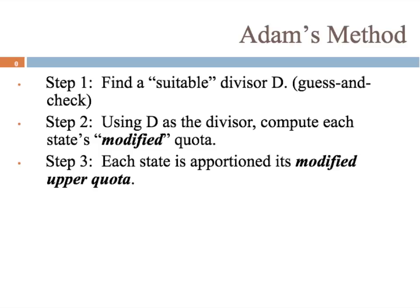Step one, we're finding a suitable divisor D — manipulating that number so that we get the amount of seats to come out right. Step two, use that to compute each modified quota. And in step three, instead of lower quota, we are using upper quota this time. So, it's pretty much the exact same process as Jefferson's method. If you haven't seen the video on Jefferson's method yet, I suggest you go back and watch that first, because I'm going to go through this method a little bit more quickly.